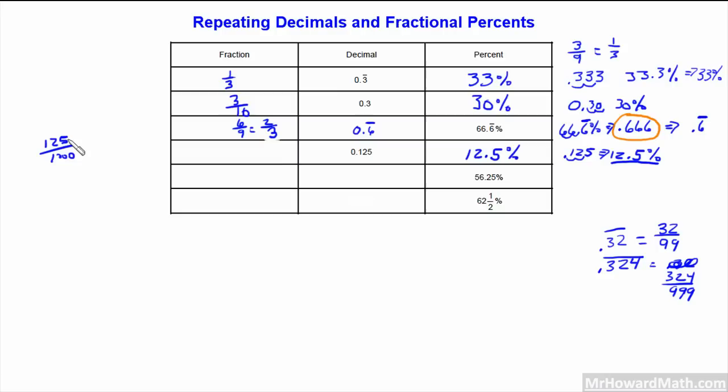So we'll start, I'm going to do it over here so we can reduce it: 125 over 1,000. And now let's just start breaking that down. Let's just start with something easy. 25 will go into this five times, right? So that reduces to 5, and 25 will go into this 40 times: 5 over 40. Now we can use 5 to reduce this: 5 goes into 5 one time, goes into 40 eight times. One-eighth.